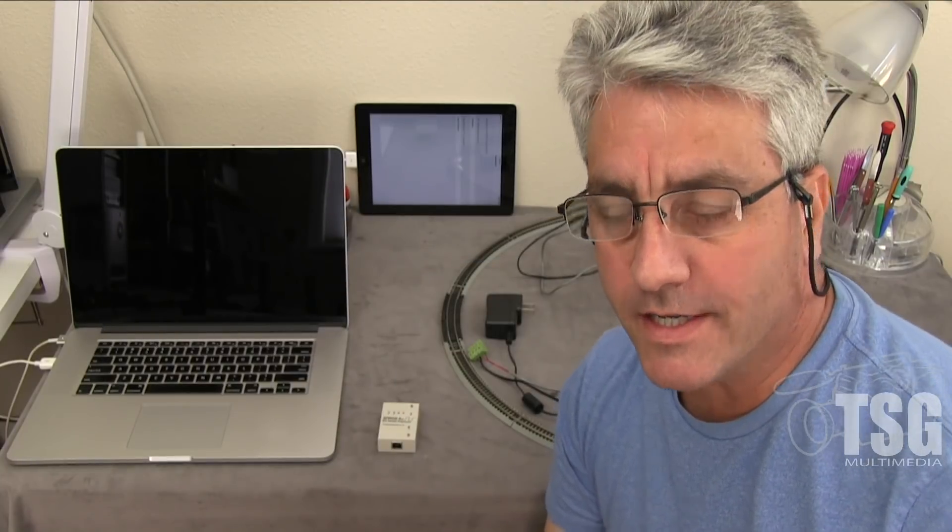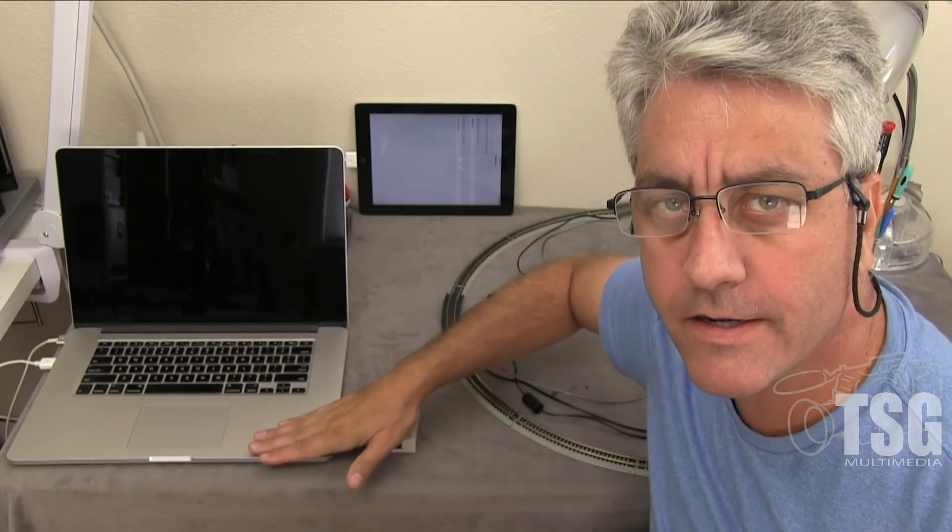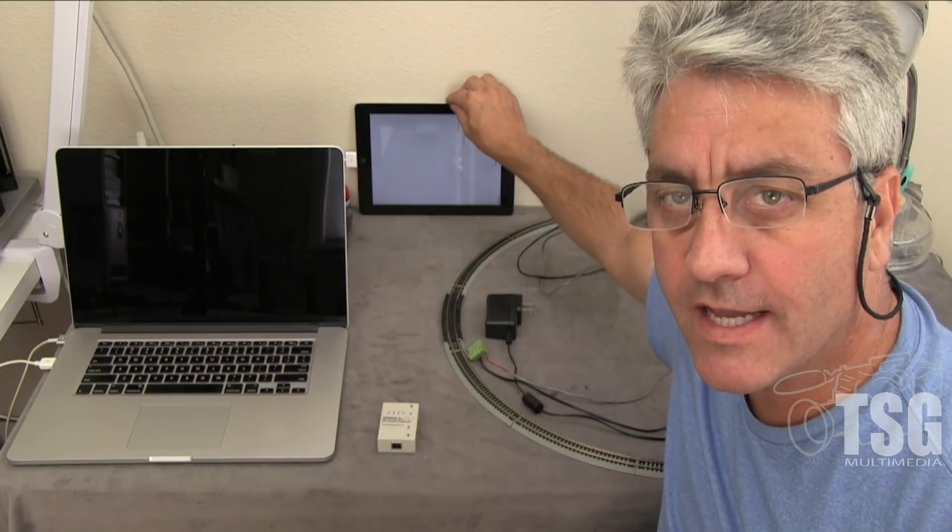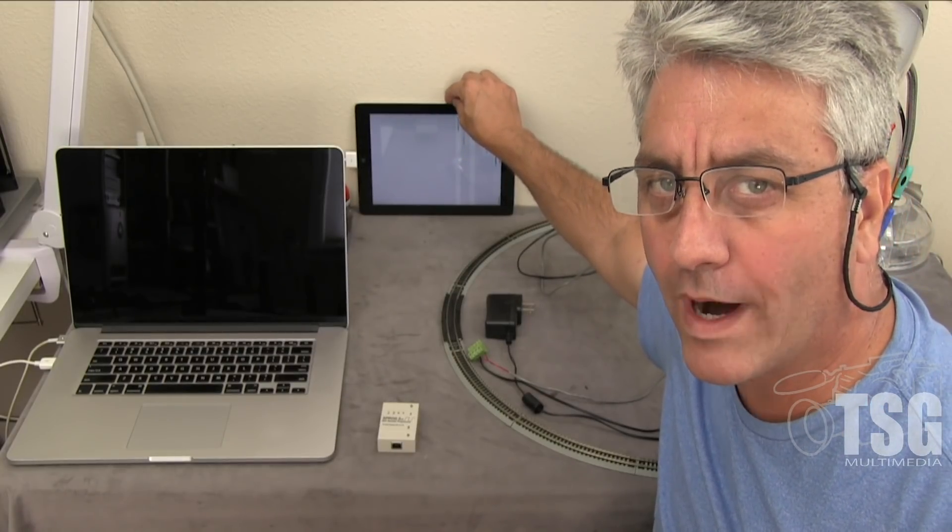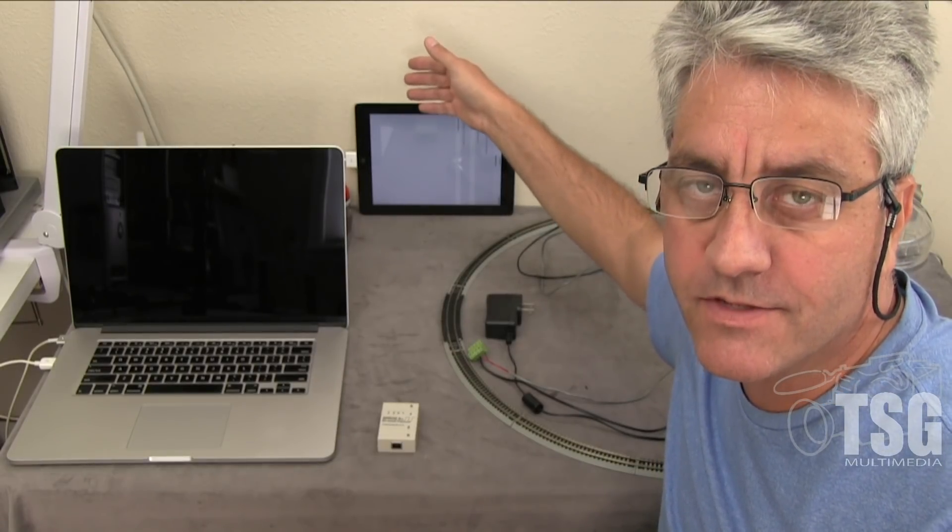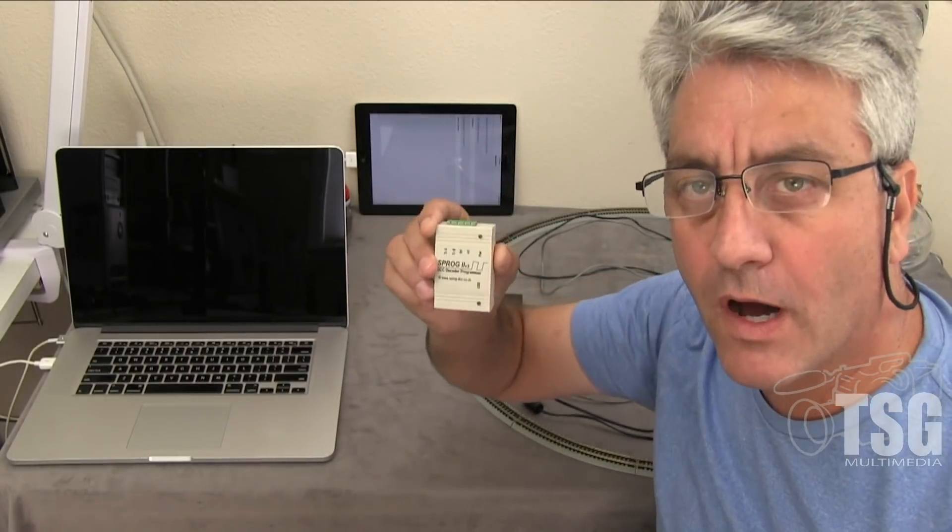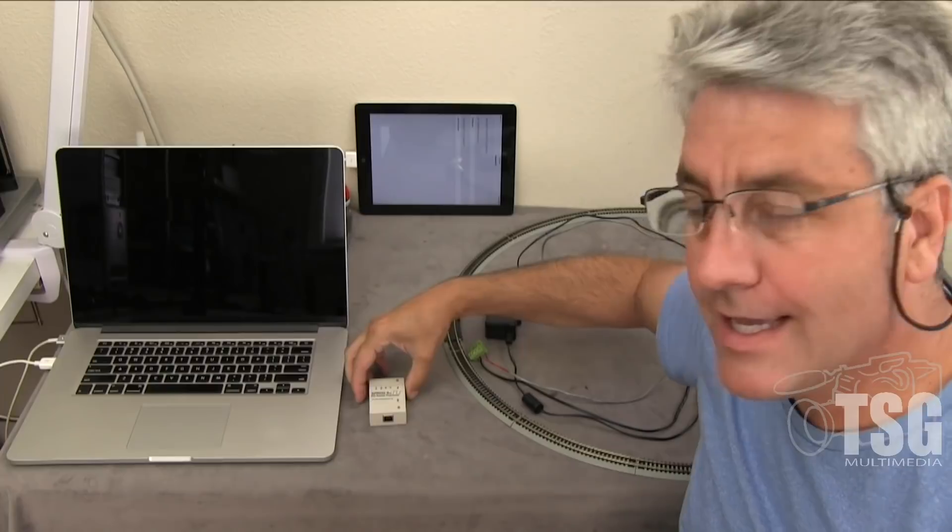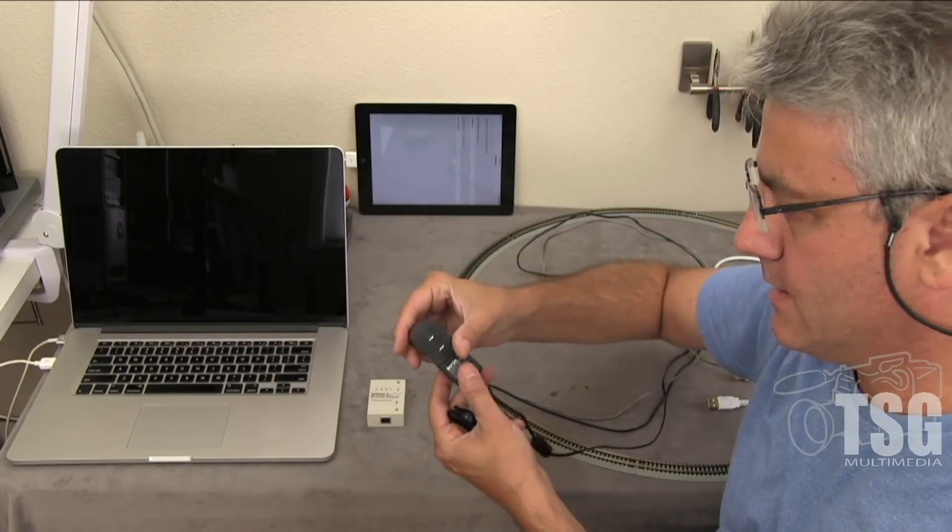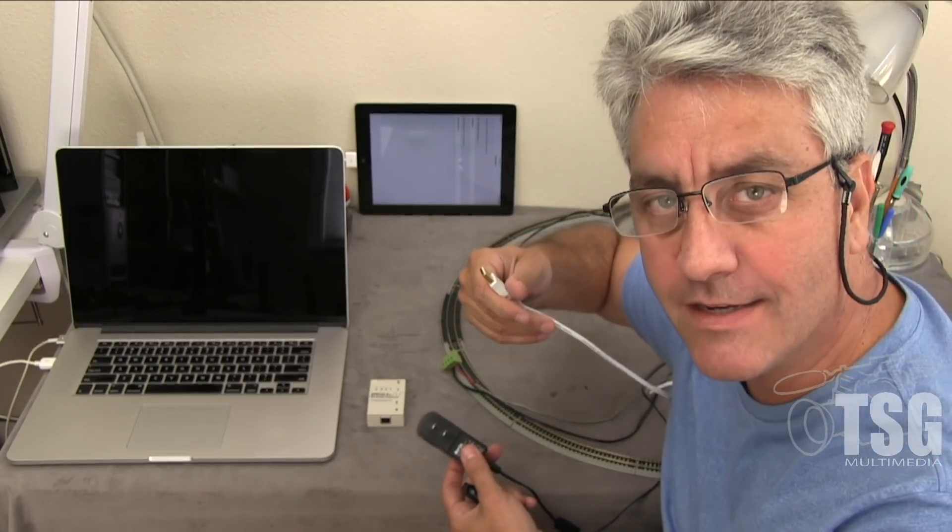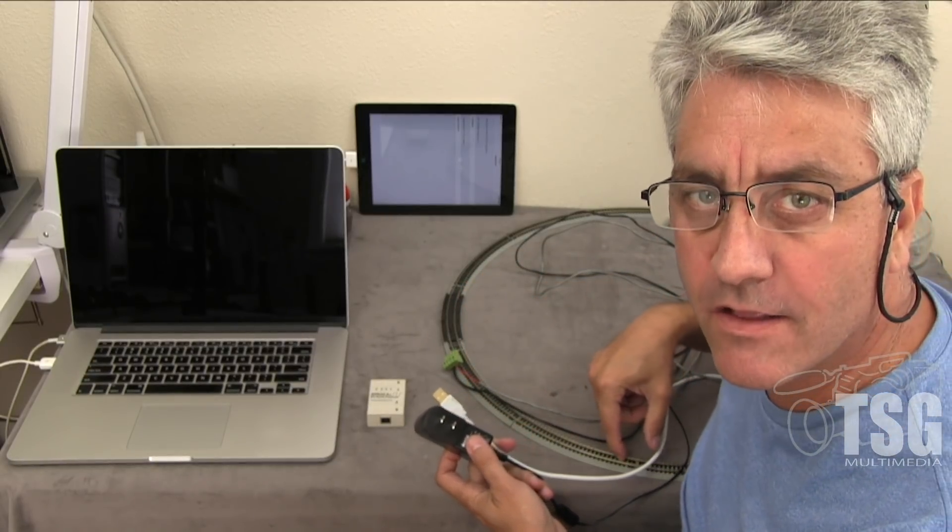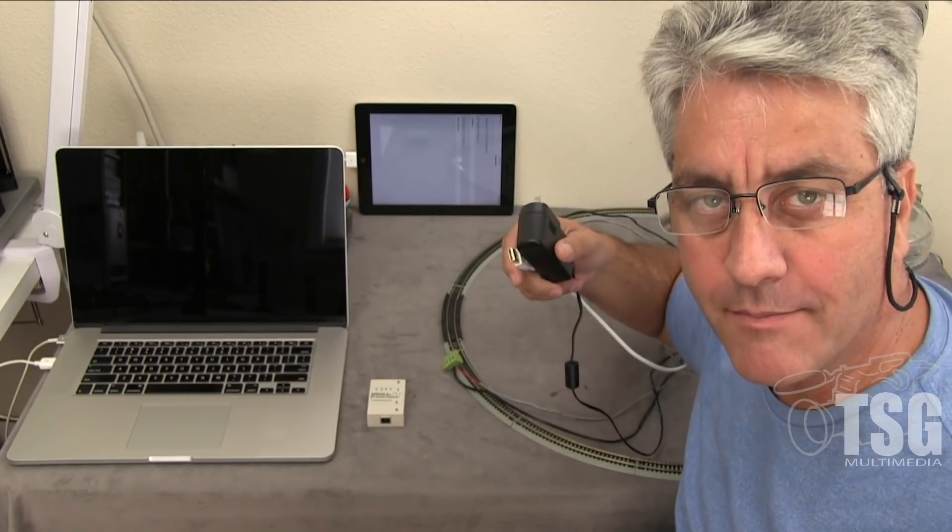Alright, so we're here at the workbench and I have my computer here. Any computer with JMRI on it will work. I just happen to have a Mac. I have a tablet here that's going to run WiThrottle. You can use a phone, whatever device you want to use. I have the Sprog. That's this little box here. And that little box requires this power cord and USB to connect to the computer. And then, of course, I have my circle of track here that the locomotives are going to run on. So let's get this thing hooked up and we'll go from there.